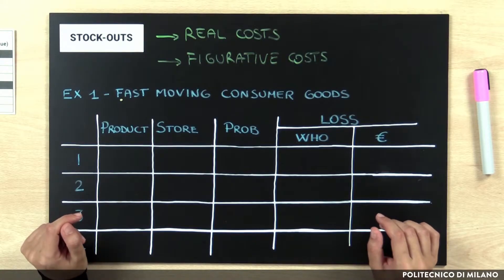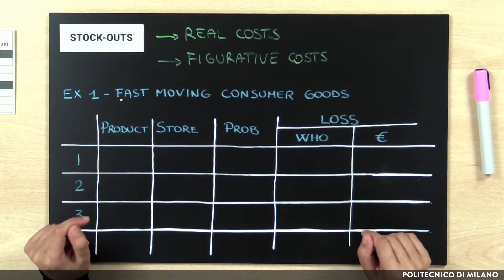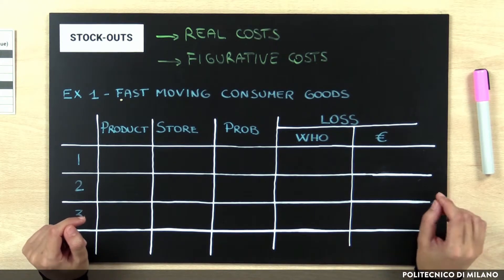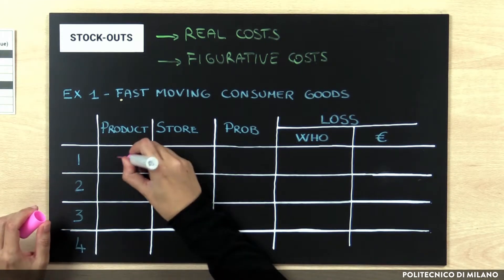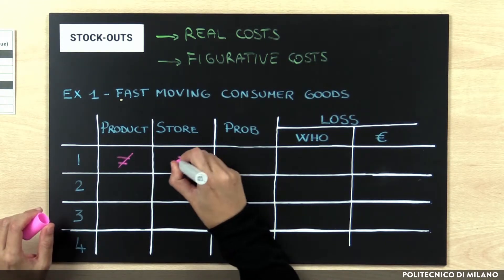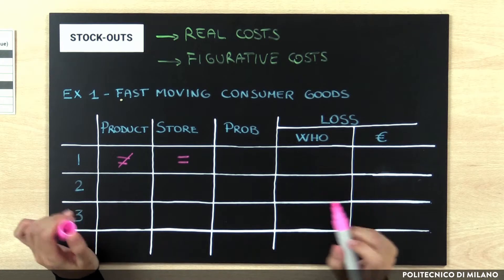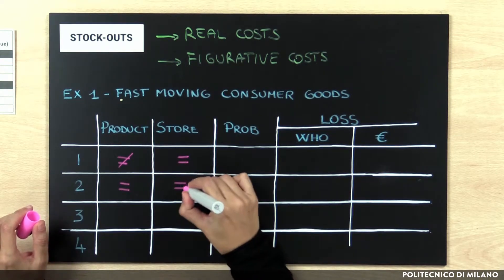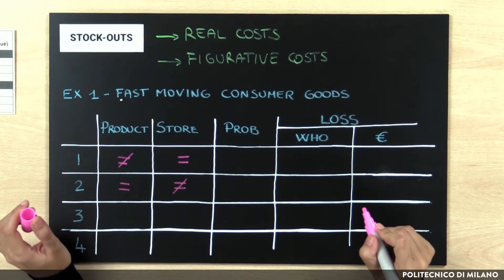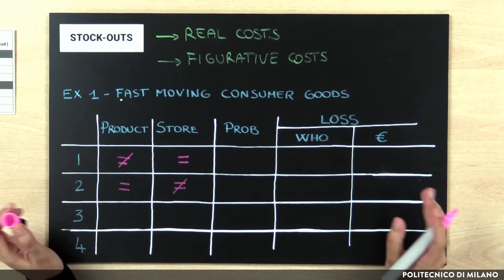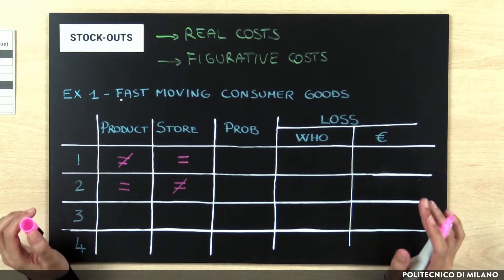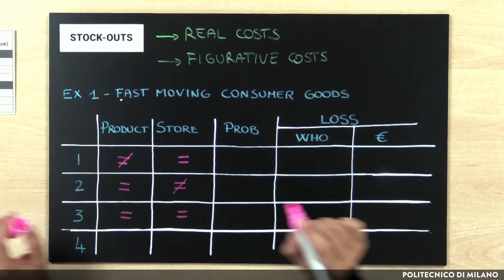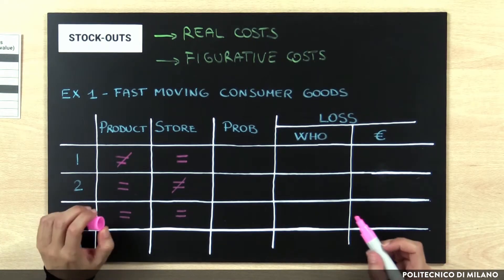Let's start with the fast-moving consumer goods case. When a stock-out occurs, the customer can decide to buy a different product in the same store, to buy the same product in another store, to postpone the purchase but buy the same product in the same store when available, or finally, not to buy anything.